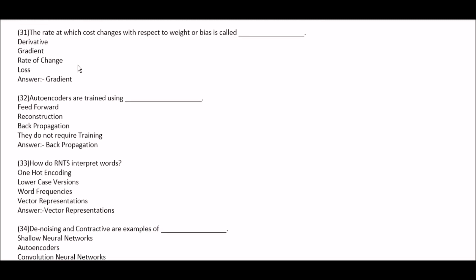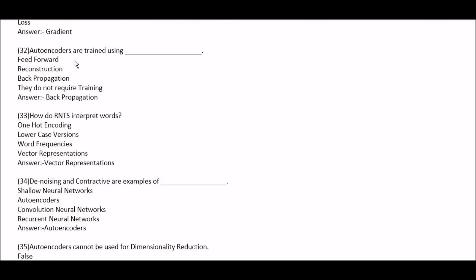The rate at which cost changes with respect to weight or bias is called — option A: derivative. Option B: gradient. Option C: rate of change. Option D: loss. Right answer is option B, gradient. Next question: autoencoders are trained using — option A: feed forward. Option B: reconstruction. Option C: backpropagation. Option D: they do not require training. Right answer is option C, backpropagation — autoencoders are trained using the backpropagation method and algorithms.